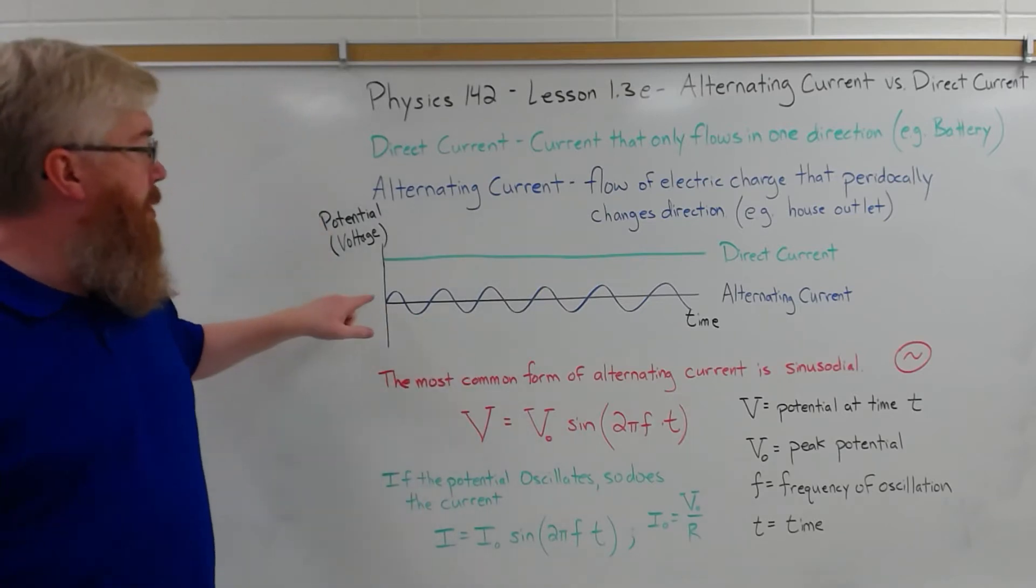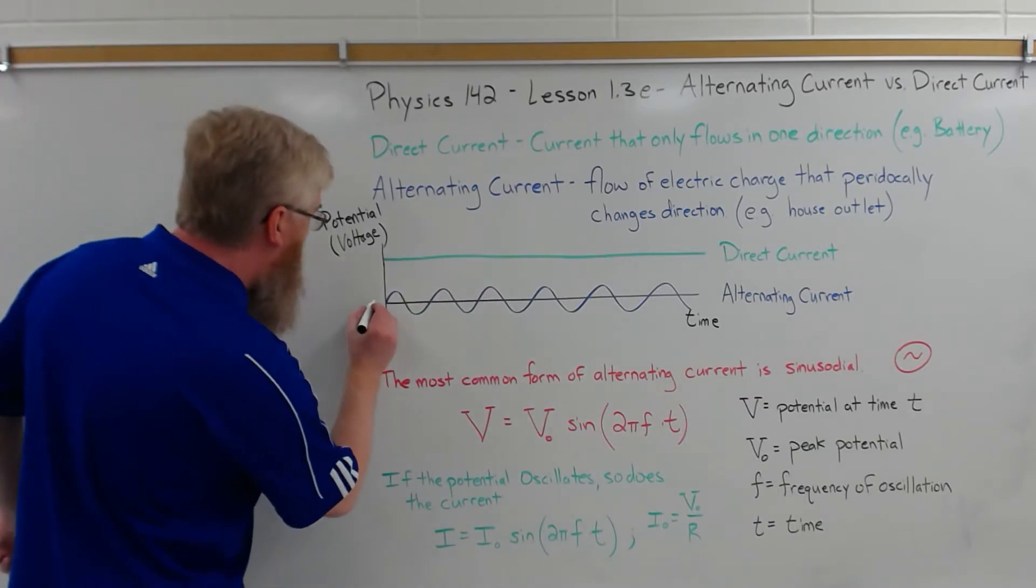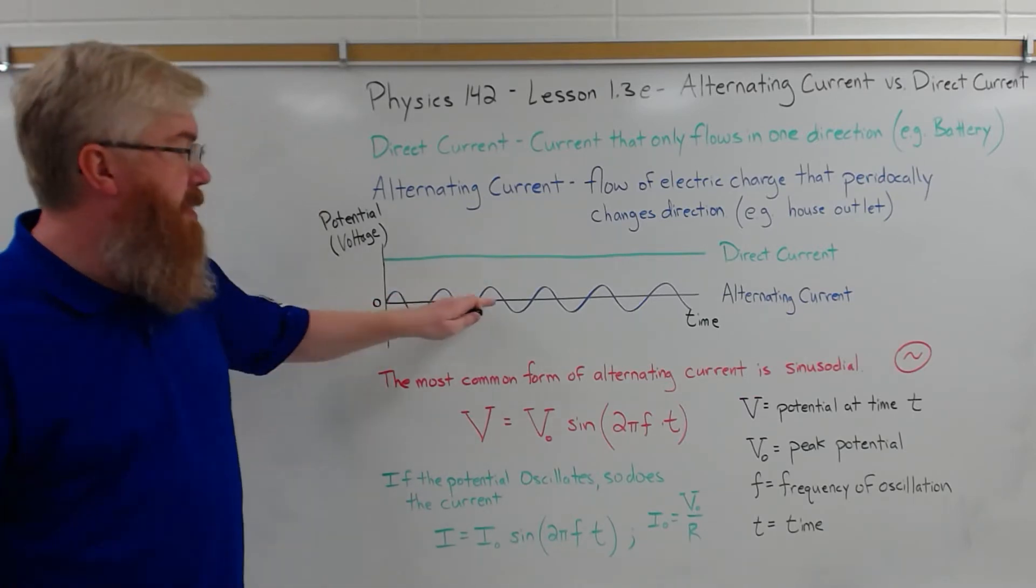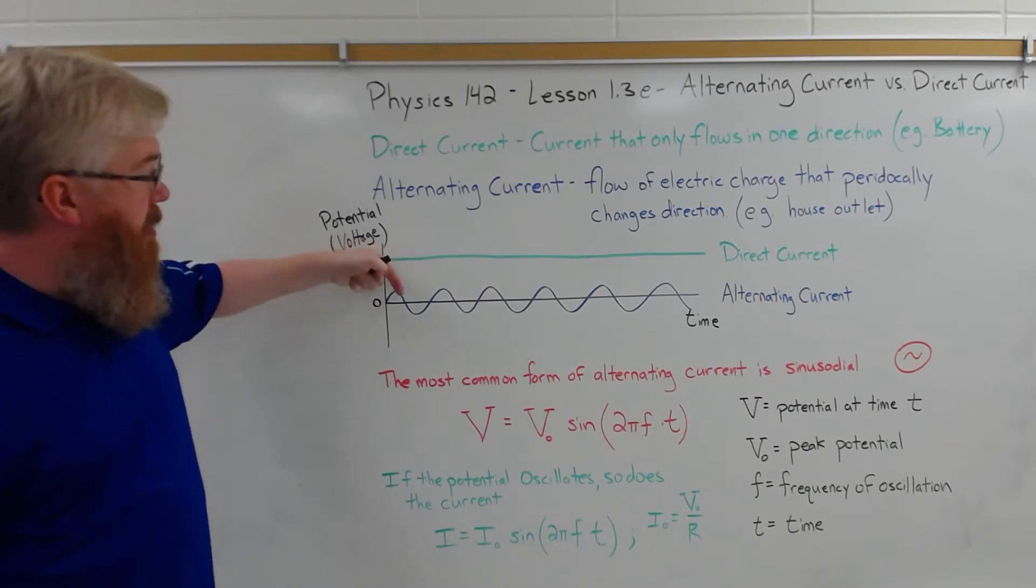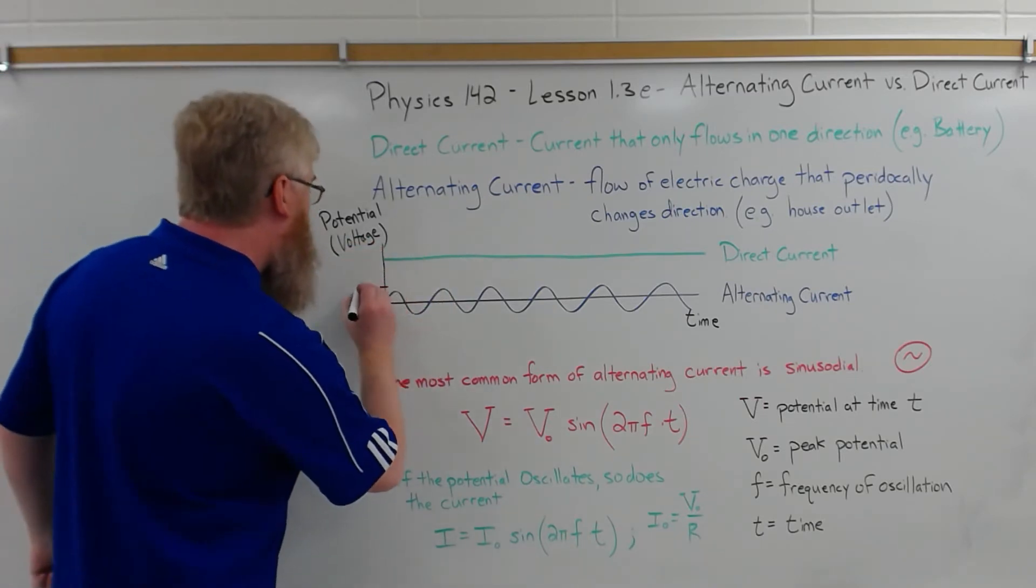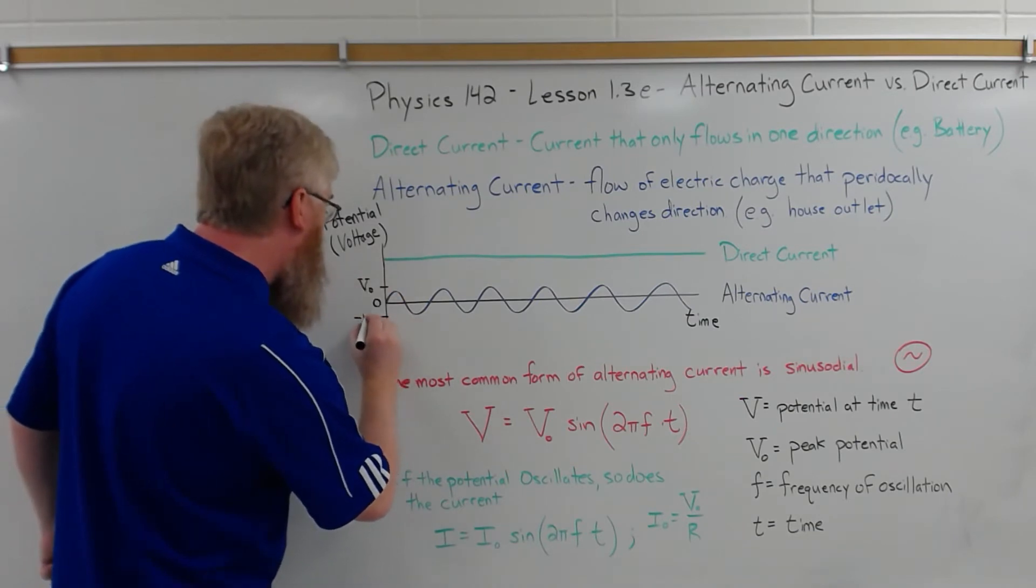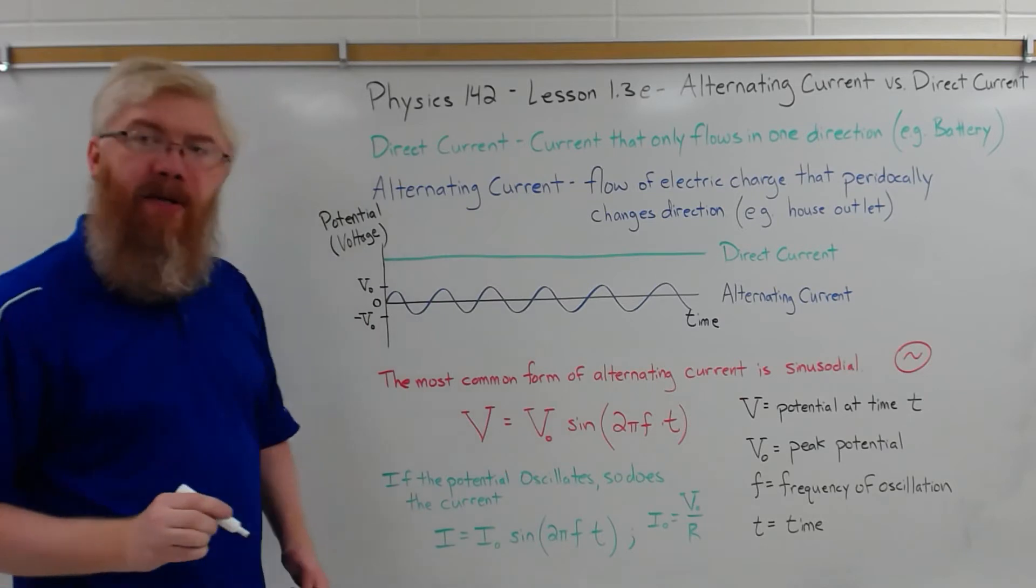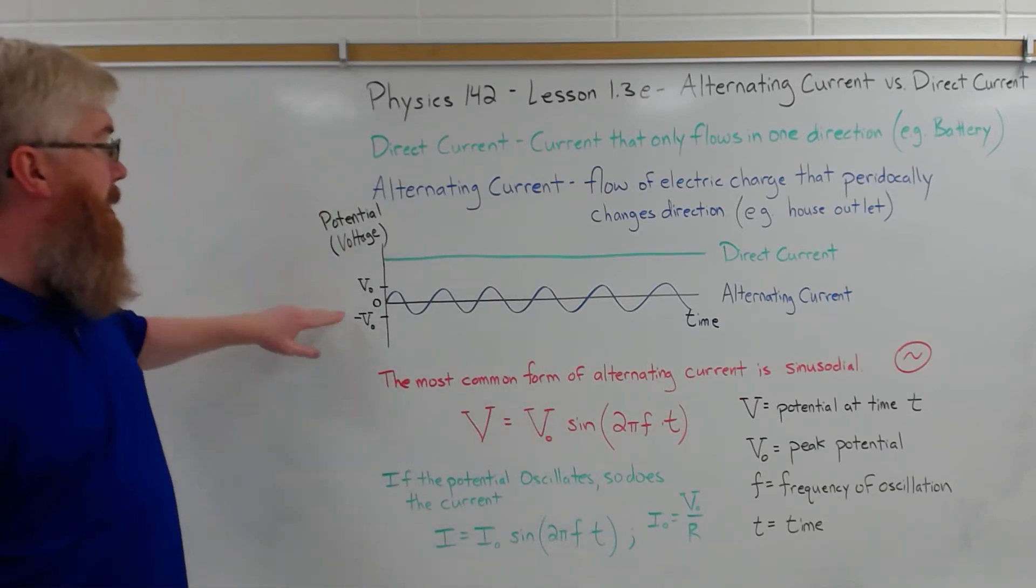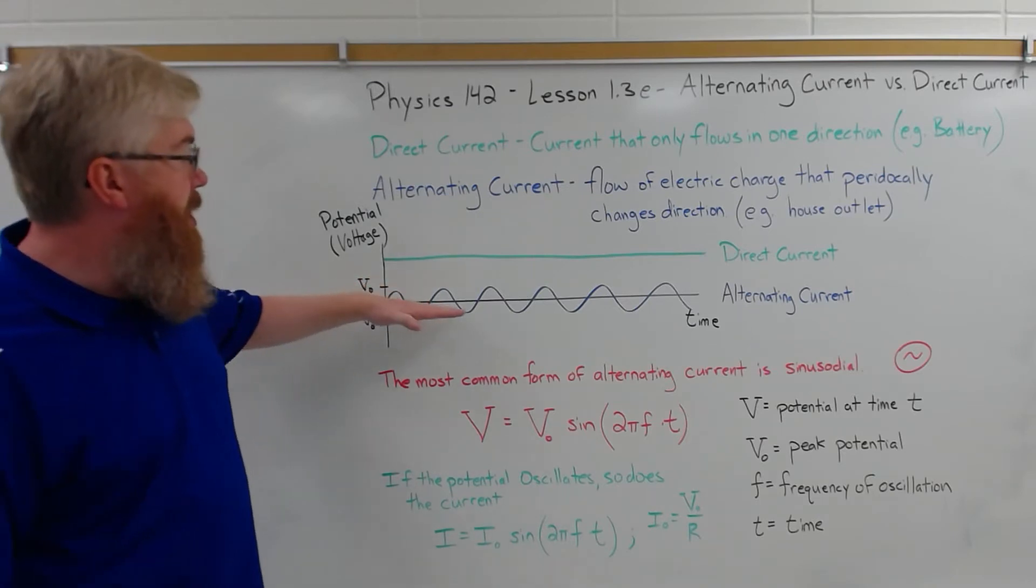In alternating current, the potential changes with time. It goes through zero. So that line is zero. The potential is positive, and then it goes back to negative. Then it goes to positive, then it goes to negative. And it goes to some maximum and minimum potential. That maximum and minimum are potentials we'll call V₀ and negative V₀, assuming there's symmetry there. And changes with time.